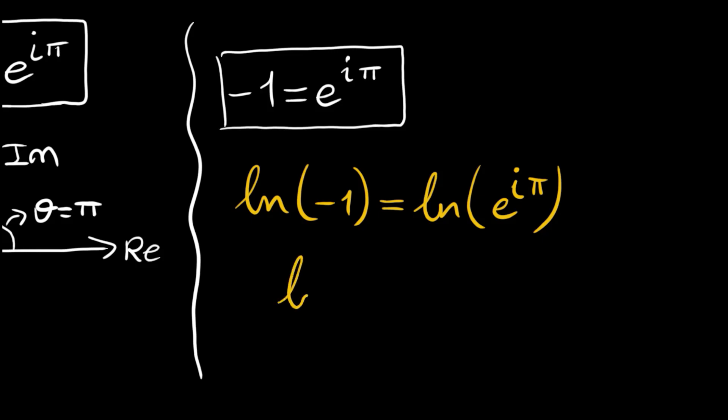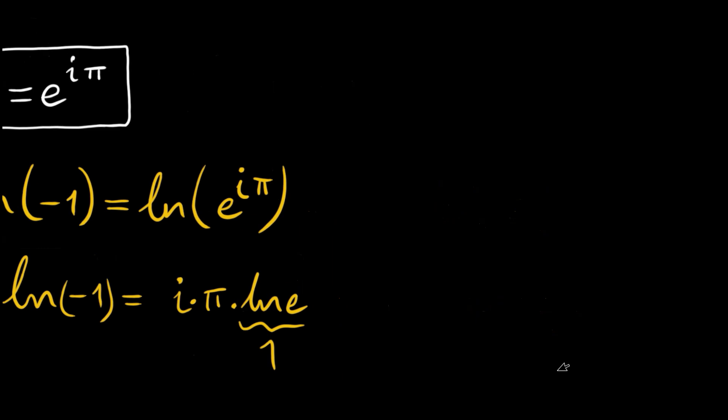So this is equal to, we have this power, i times pi times ln e. And ln e is equal to 1, so ln negative 1 becomes i times pi.